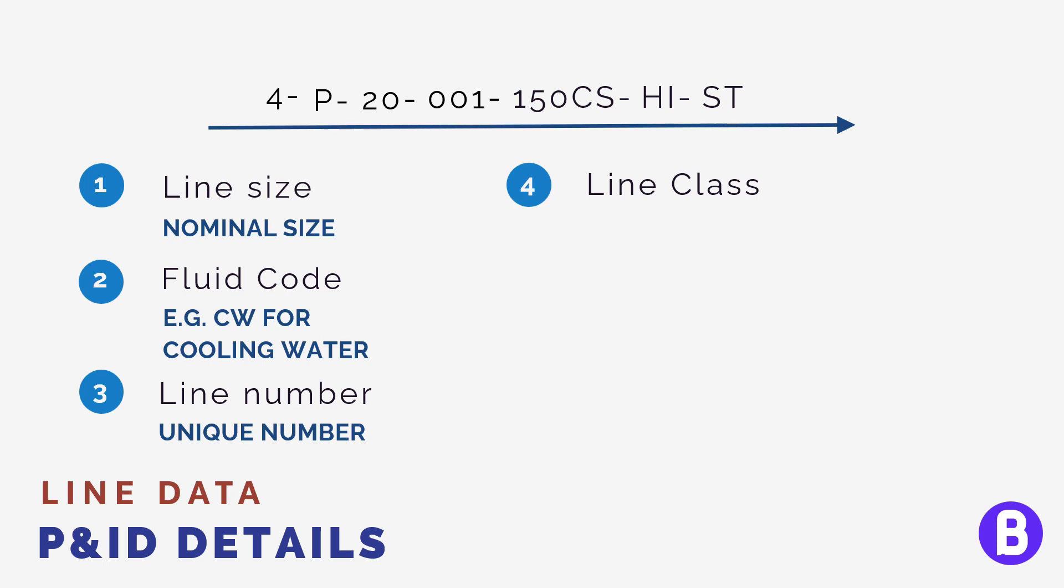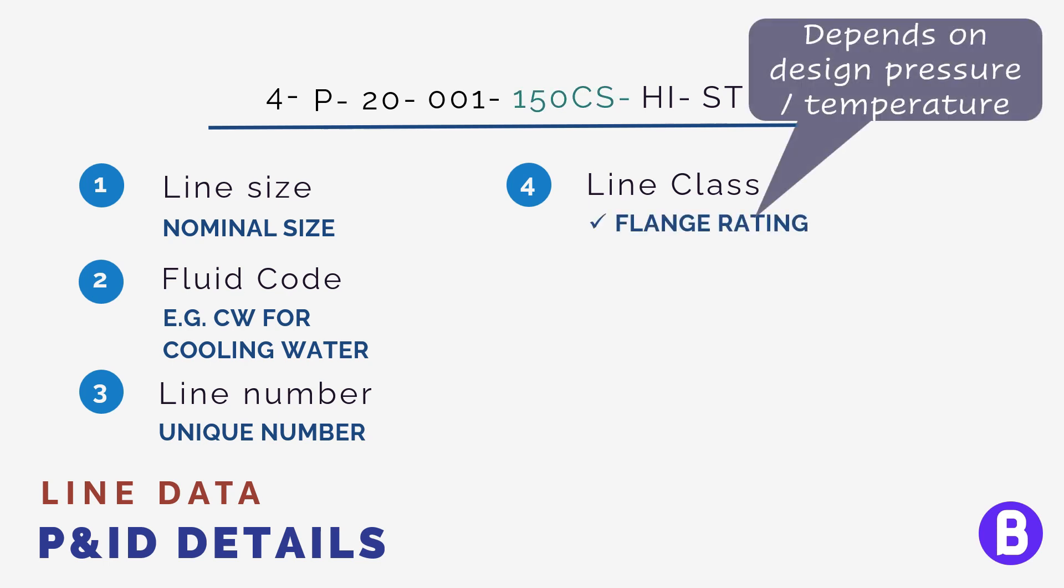The line class. The line class is generally a code that reflects the material of construction and flange rating. Each flange has a rating which has a maximum pressure and temperature that is expected to withstand. So a 150 rating flange is expected to withstand around 18 bar gauge at 100 degrees C.